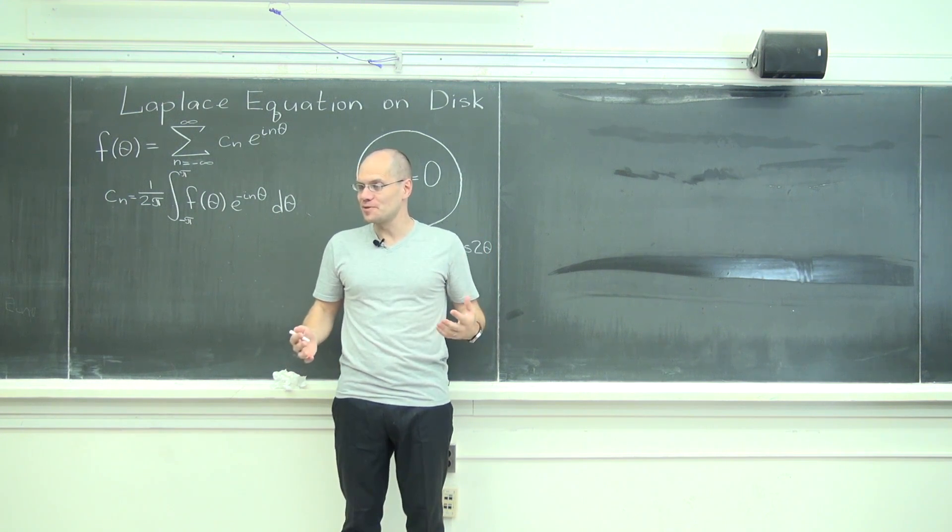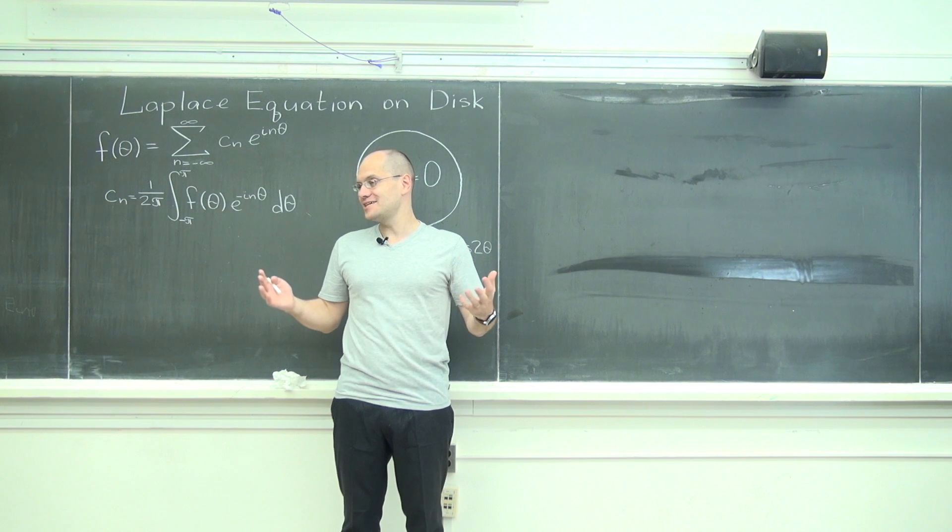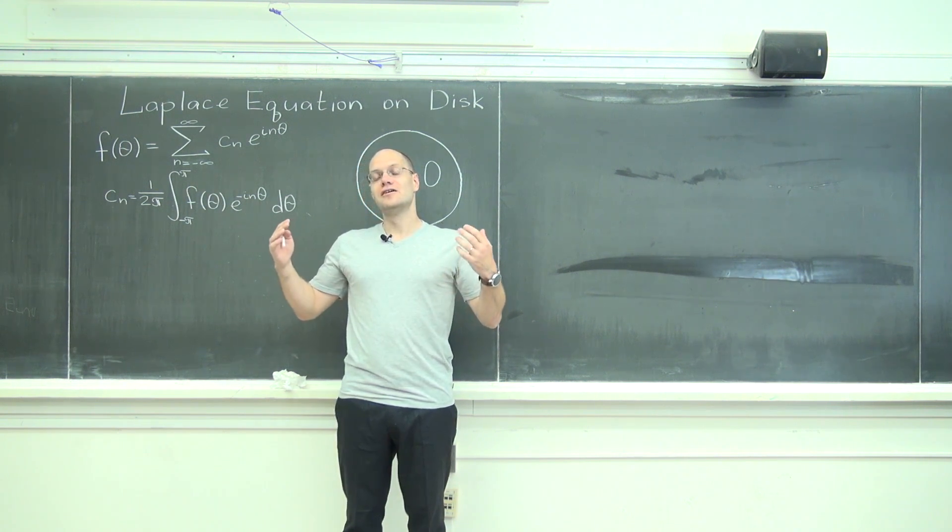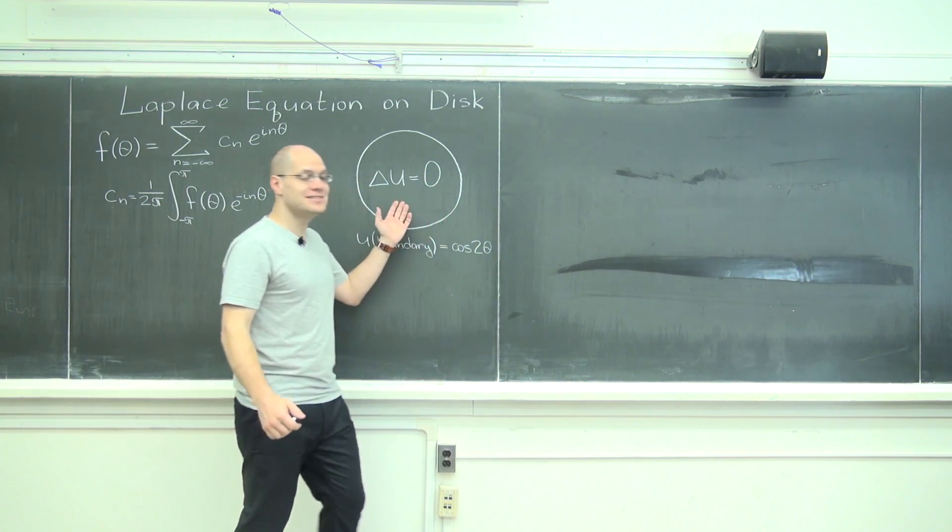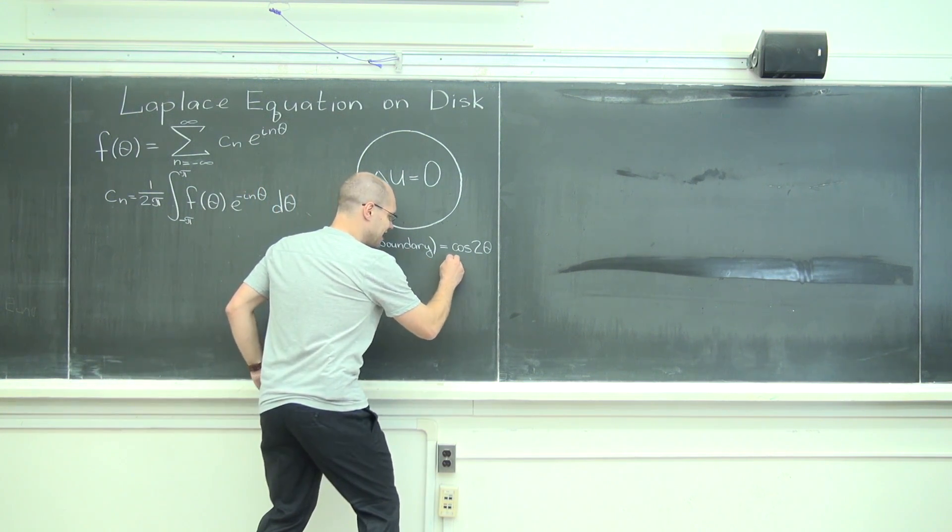We will now derive Poisson's formula, which is a closed form solution in the 19th century sense for Laplace's equation on the unit disk for arbitrary boundary conditions f of theta.